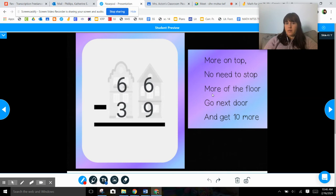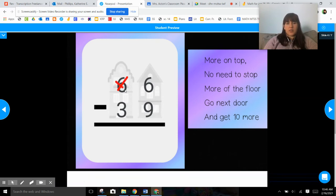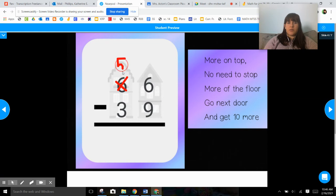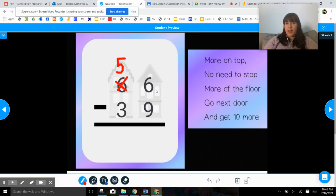So we need to do the second part of our poem: more on the floor, go next door. So we're going to go next door. We're going to cross out the 6 and we're going to get 10 more. And we know that 6 is actually 6 ten sticks. We're going to take one of those ten sticks and move it over back to our house.